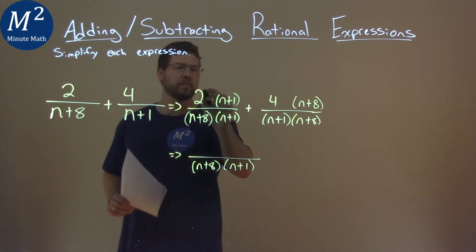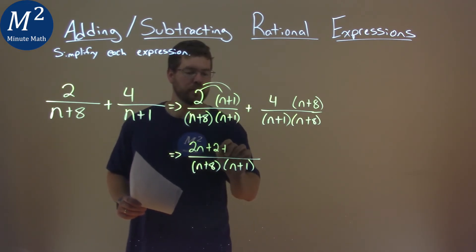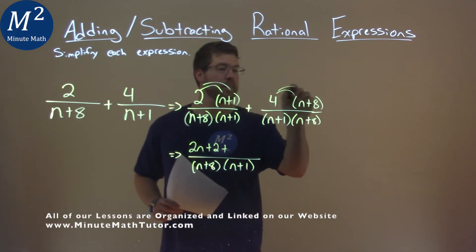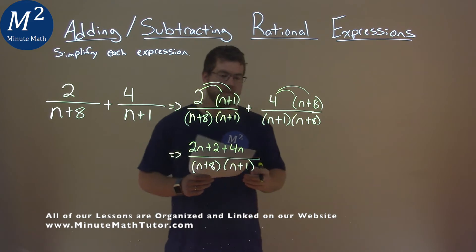The numerator, we just multiply this out. 2 times n is 2n, and 2 times 1 is 2. Do the same thing with the 4: 4 times n is 4n, and 4 times 8 is 32.